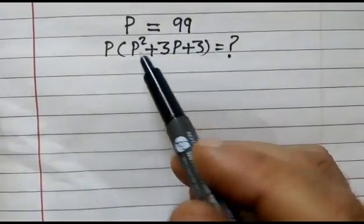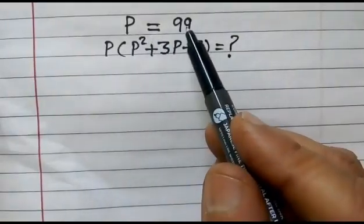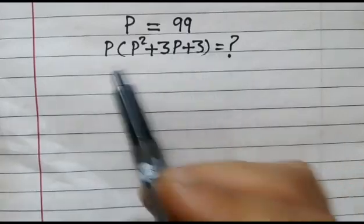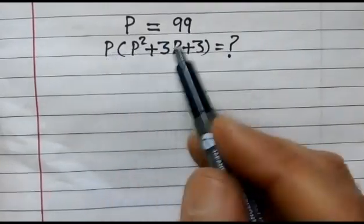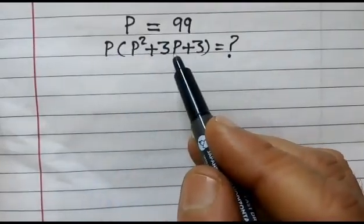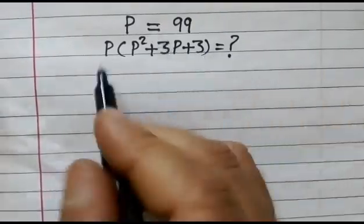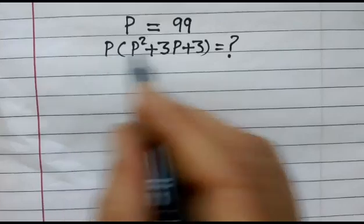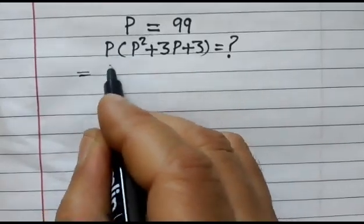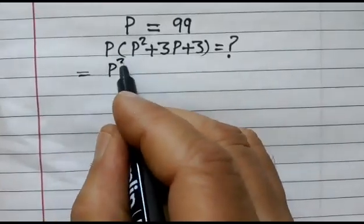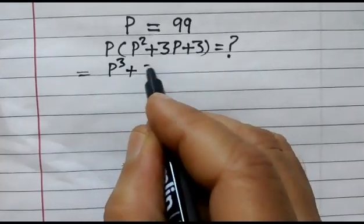Hi friends, we have given P = 99. We have to find out P(P² + 3P + 3) = ?. So if we multiply this, we get P³ + 3P² + 3P.